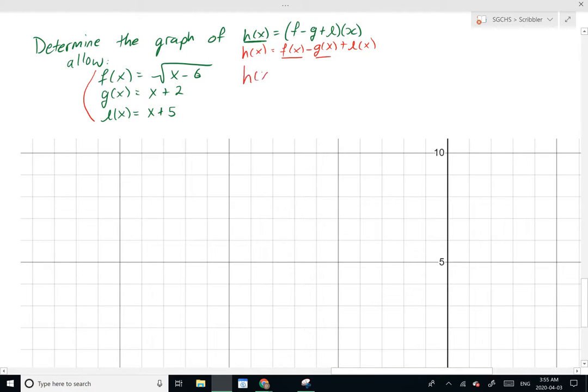So h(x) would equal f(x). I'm going to put that in brackets, f(x) being √(x-6) minus bracket, and now I'm going to apply g(x) equation and substitute g(x) for the actual equation it is. So x plus 2 bracket plus l(x), which I'm going to substitute its equation, x plus 5.